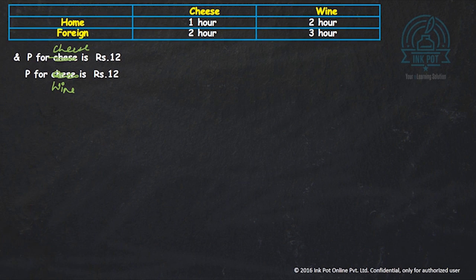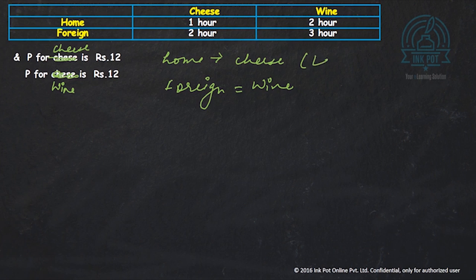We know home is specializing in cheese. We also know foreign is specializing in wine. So imagine that all the labour is going towards cheese and for the foreign the entire labour is going towards wine.